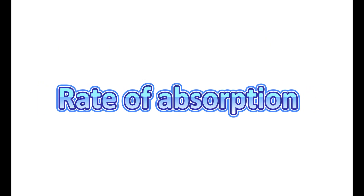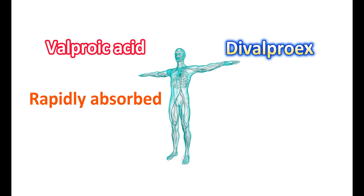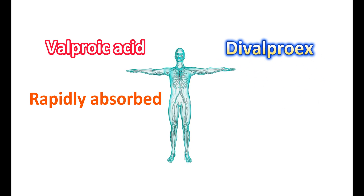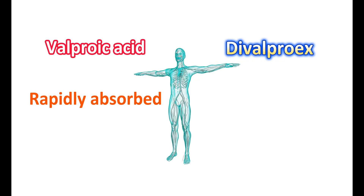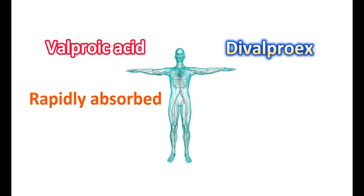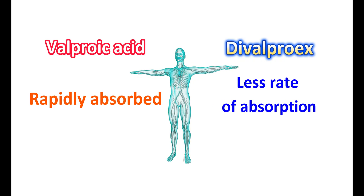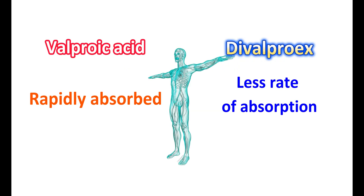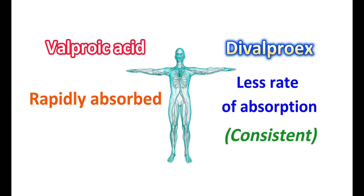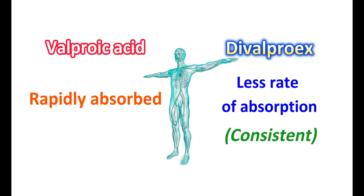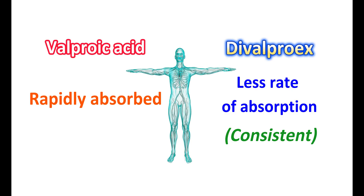Rate of absorption: Valproic acid is rapidly absorbed and reaches peak plasma concentration within 1 to 4 hours after administration. On the other hand, divalproex is a combination of valproic acid and its sodium salt, so it shows a slower rate of absorption into the body. However, its absorption is more consistent and produces a uniform rate of absorption of valproic acid.